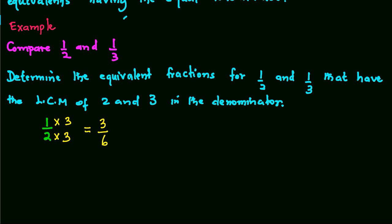And in the case of a third, we're going to have 3 times 2, 1 times 2, so this gives 2 over 6. So in both cases, we have 6 as the denominator.